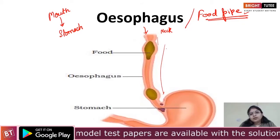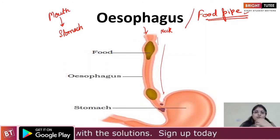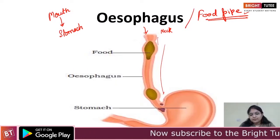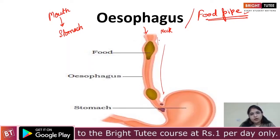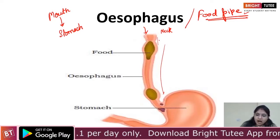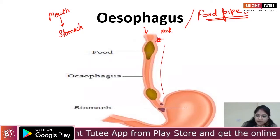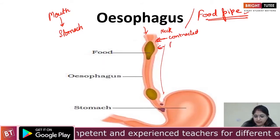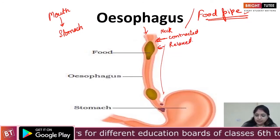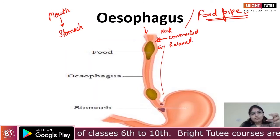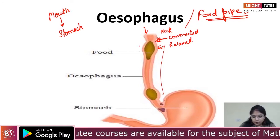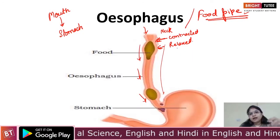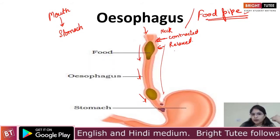You might wonder how the movement of food takes place. Do we simply put the food into our mouth and it just slides down? That is not the case. There is a special type of movement which occurs in the esophagus that allows the food to move down towards the stomach. As you can see, there is a contraction — this part is contracted and this part is relaxed. When the contraction occurs, it allows the food to be pushed forward towards the stomach. There is contraction and then relaxation, and this movement allows the downward movement of food from your buccal cavity towards the stomach.